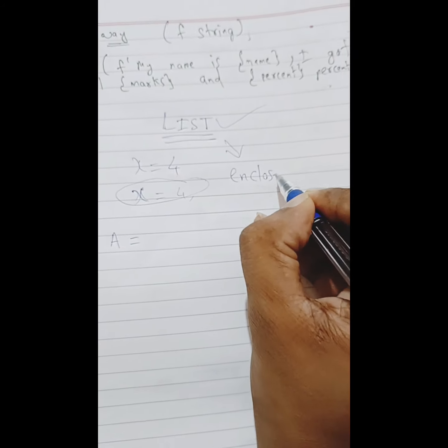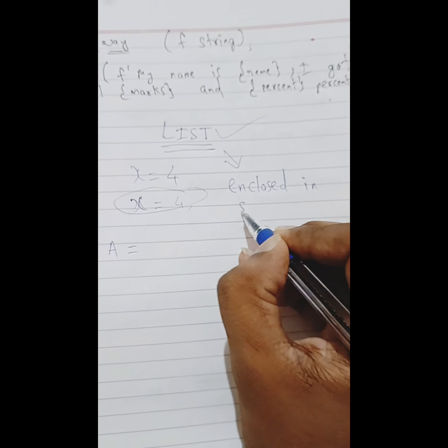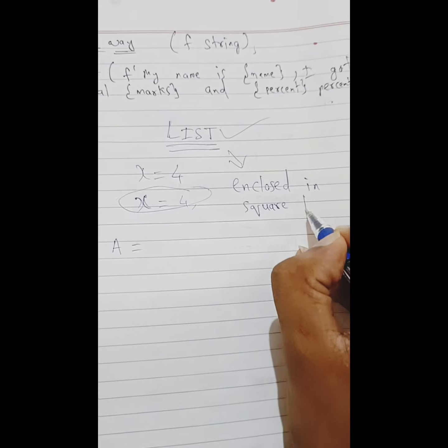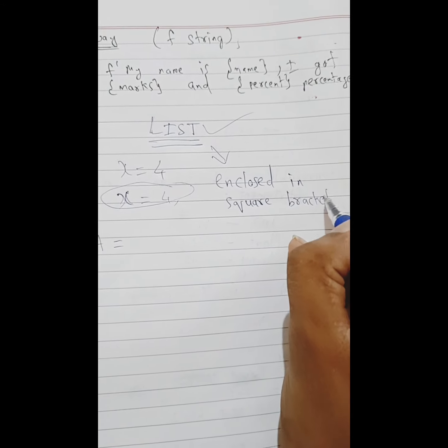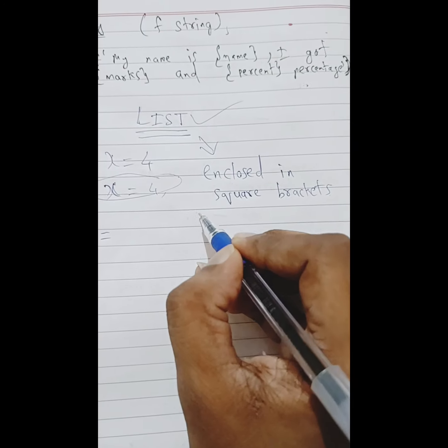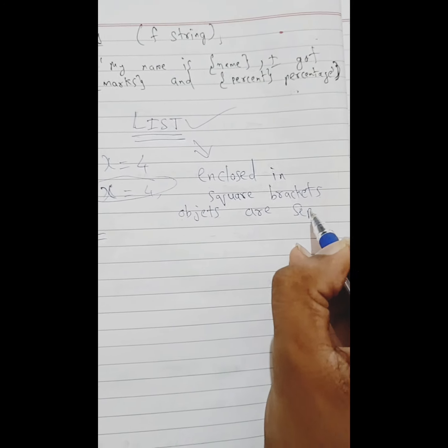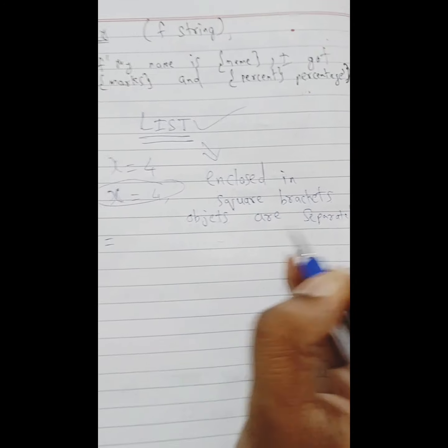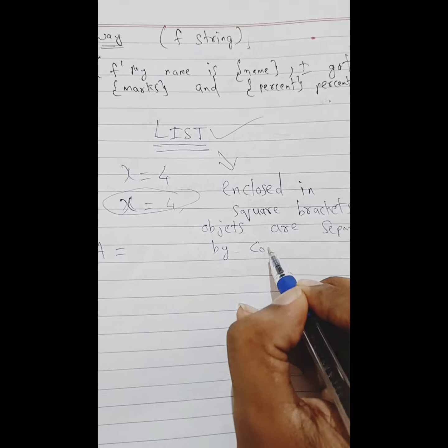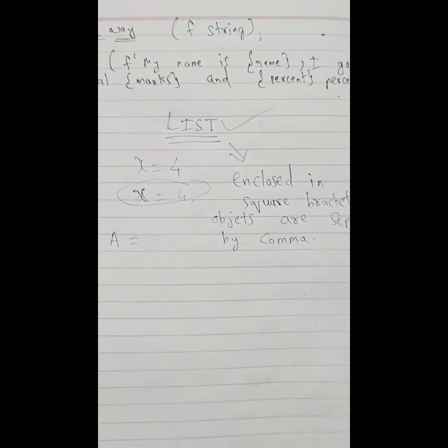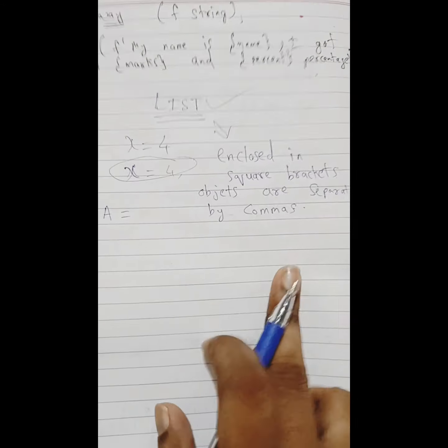A list has 2-3 rules. First thing, it should be enclosed in square brackets. Second thing, objects are separated by commas.